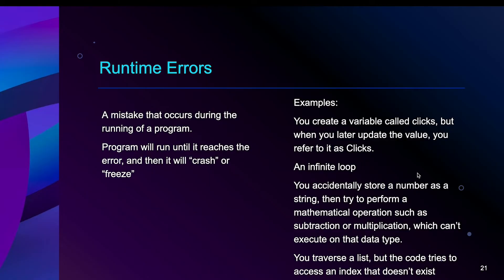If you accidentally store a number as a string, so common thing I've seen here is if a student is making an interactive app, and you use get text, get text, get text, and all of a sudden you have a number that you want to perform a calculation with, it's going to put those quotation marks around it. If you accidentally store a number as a string in that way, then you try to perform a mathematical operation such as subtraction or multiplication, that can't be executed on that data type. Another example might be if you're traversing a list but you have an index value that does not exist.